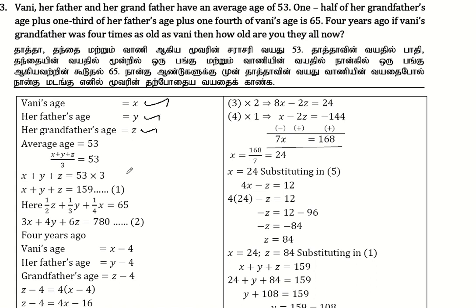The average is equal to 53, so the total sum equals 53 times 3. We let x, y, and z represent the ages. So x plus y plus z divided by 3 is equal to 53, and multiplying both sides by 3, we get x plus y plus z is equal to 159.